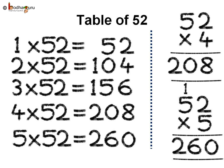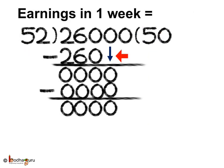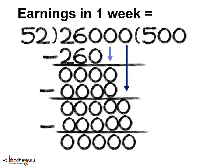Which is the number we are looking for. So let us use 5 to divide. 5 times 52 is 260. 260 minus 260 is 0. Let us bring down 0. 52 zeros are 0. 0 minus 0 is 0. Again, bring down 0. So the answer is 500. Thus, earning per week is equal to 500 rupees.